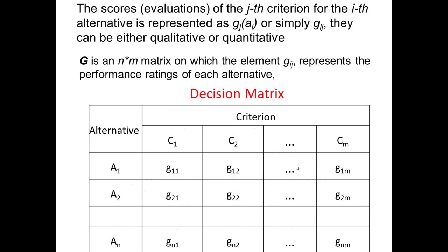The scores—that is, the evaluation of the j-th criterion for the i-th alternative—are represented as g(j,ai) or simply gij. They can be either qualitative or quantitative. These scores are best represented in a table or in matrix form, the decision matrix form as shown here.